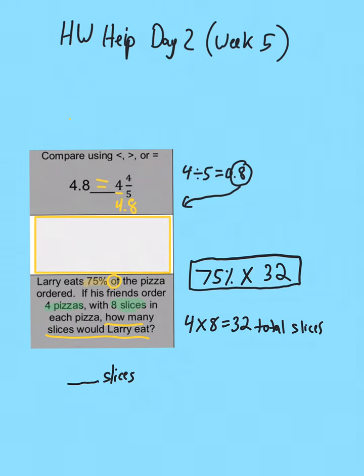If you have the percent button, just type in 75% times 32. If you don't have the percent button, you type in the decimal form of 75%, which is 0.75 times 32. And if you do that, you're going to get your answer of 24 slices.